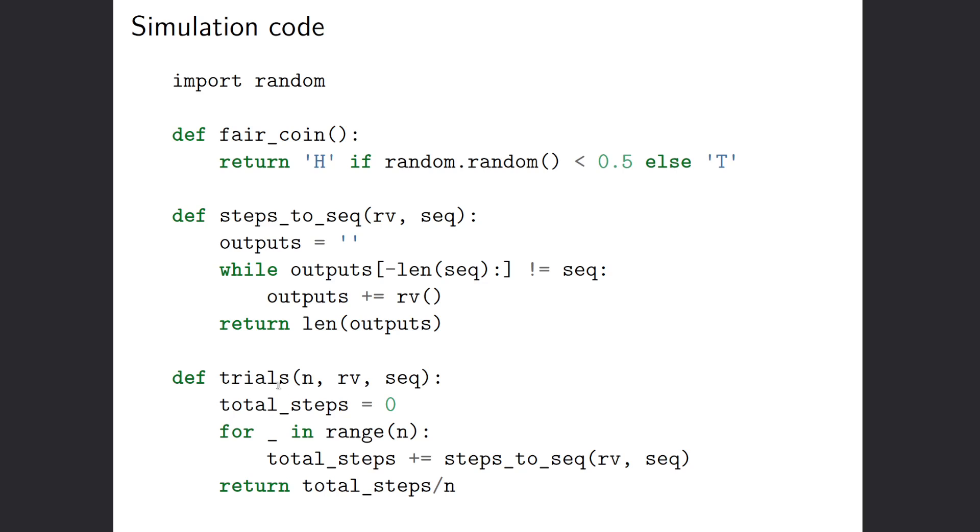And here, we just have a helper function to run our steps_to_seq function a certain number of times, and then divide that by the total number of times that we ran in order to get the average, basically the average number of steps. So that's going to be an approximation for the expected number of steps before we see the sequence in general.